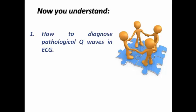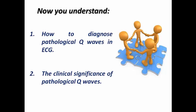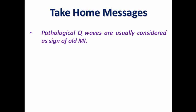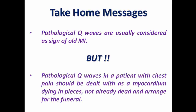At the end of this lecture, we understand how to diagnose pathological Q-waves on ECG and their clinical significance. Our take-home message is that pathological Q-waves are usually assumed as a sign of old MI — but do not forget that a pathological Q-wave in a patient with chest pain should be treated as myocardium dying in pieces, not already dead. Pathological Q-waves should be properly understood so as not to omit a chance for revascularization.